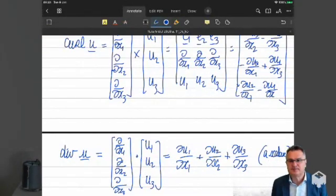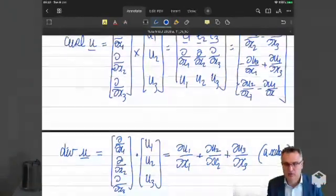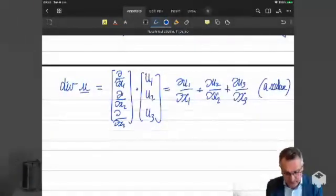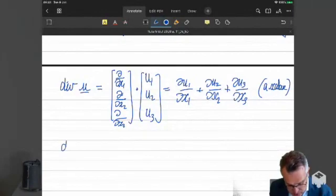So you can see the gradient makes you go one order in the tensor family, right? You go from, if you apply gradient to scalar, you go up to a vector. If you apply gradient to vector, you go up to a tensor. While the divergence goes the other way around. If you apply divergence to a vector, you go down to scalar. If you apply divergence to a tensor, you will go down to a vector.